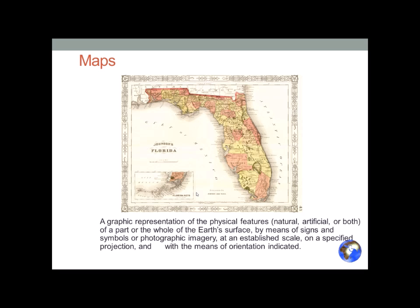The geographic definition of a map is a graphic representation of physical features — natural, artificial, or both — of a part or the whole of the Earth's surface by means of signs and symbols or photographic imagery, at an established scale on a specified projection and with the means of orientation indicated. So we have to have signs or symbols, a scale, a projection, and a means of orientation — north-south. The projection tells you what's preserved in the map.